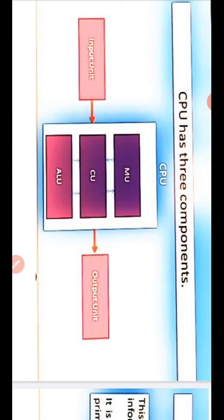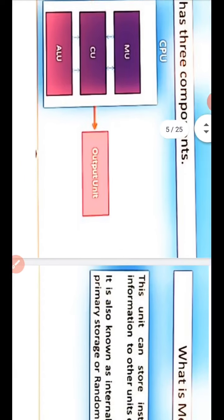CPU has three main components: Memory Unit, denoted by MU; Control Unit, denoted by CU; and ALU, which stands for Arithmetic Logical Unit.